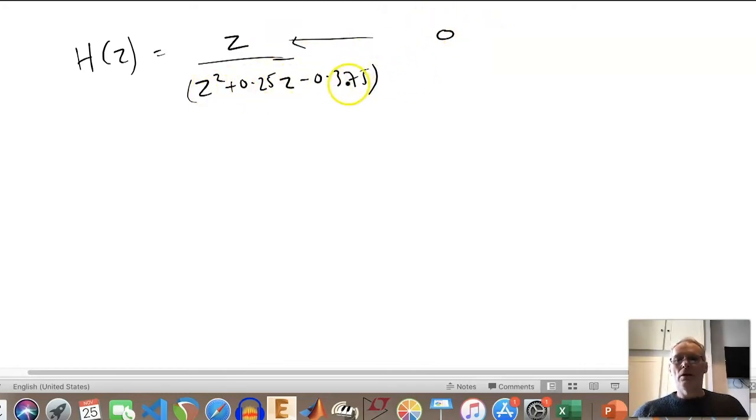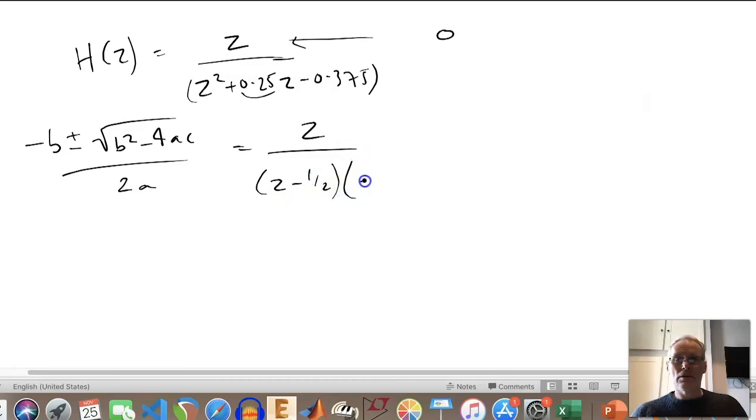In terms of poles, we have to find the roots of this equation here. One method is to utilize the following equation: (-b ± √(b² - 4ac))/(2a). The roots effectively of this polynomial, we find that we get this answer. So it's going to be -½, and then we get (z + ¾). So in order to make this equal to zero, there are two possible combinations: the first is to make z equal to +½.